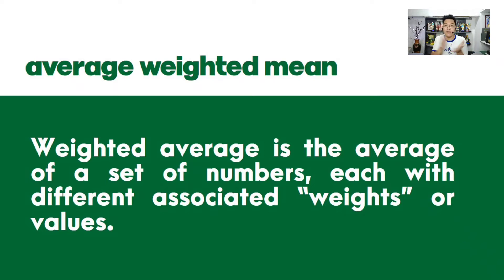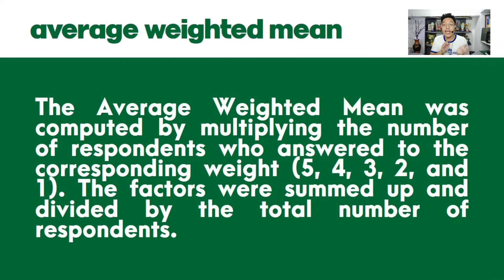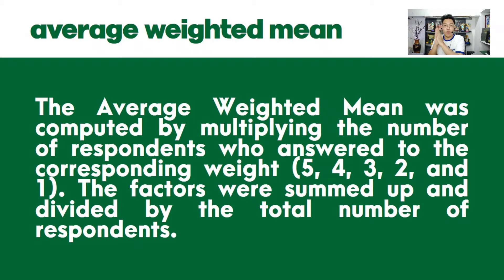The average weighted mean is the average of a set of numbers, each with different associated weights. That is why it is called a weighted mean — you assign a weight to each number. It is computed by multiplying the number of respondents who answered for each corresponding weight. For example, for 'strongly agree' you assign a weight of 5 — the highest — then multiply by how many answered it. The factors are then summed and divided by the total number of respondents.